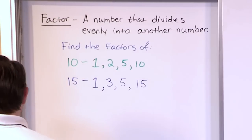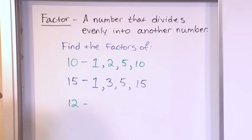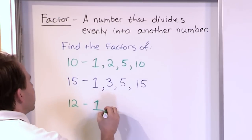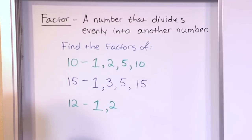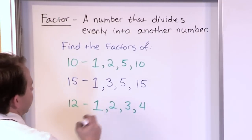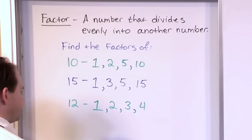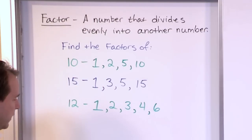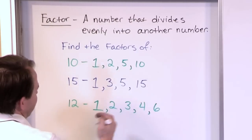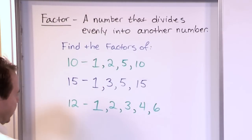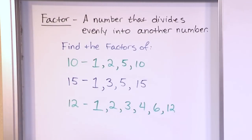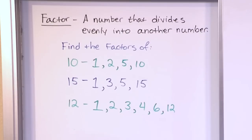Let's get a little more practice with the number 12. 1 is always a factor. 2 is a factor because 2 times 6 is 12. 3 is a factor because 3 times 4 is 12. 4 is a factor because 4 times 3 is 12. 5 is not a factor. 6 is a factor because 6 times 2 is 12. Then 8, 9, 10, and 11 are not factors. But 12 is a factor because 12 divided by 12 is 1. So the factors of 12 are 1, 2, 3, 4, 6, and 12.